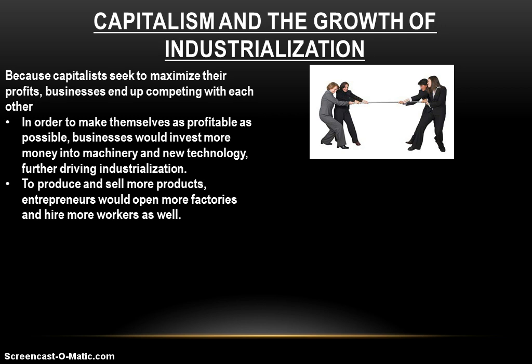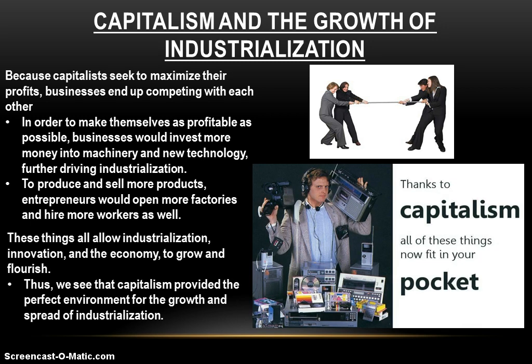To sell and produce more products, entrepreneurs open more factories and hire more workers, which further helps industrialization to grow. Think about the smartphone industry in the US today. Apple with its iPhone — if they had no competition, would Apple ever have had to grow and innovate? You'd still be working from the first version of the iPhone. But because Samsung competes with Apple for profits, it makes a better product. So Apple has to innovate. Then Samsung has to innovate again. This constant game of one-upsmanship allows the smartphone industry to keep growing, and that's exactly what competition and capitalism did for industrialization.